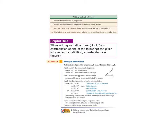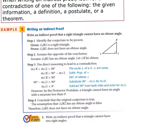The example Ms. Glick went over in class was proving the indirect proof that a right triangle cannot have an obtuse angle. The first thing you want to do is identify what you're trying to prove — that a right triangle doesn't have an obtuse angle — but then you assume the opposite. The word 'cannot' is changed to its opposite, so your assumption becomes: a right triangle can have an obtuse angle. That's your assumption, and that's the first step in an indirect proof.